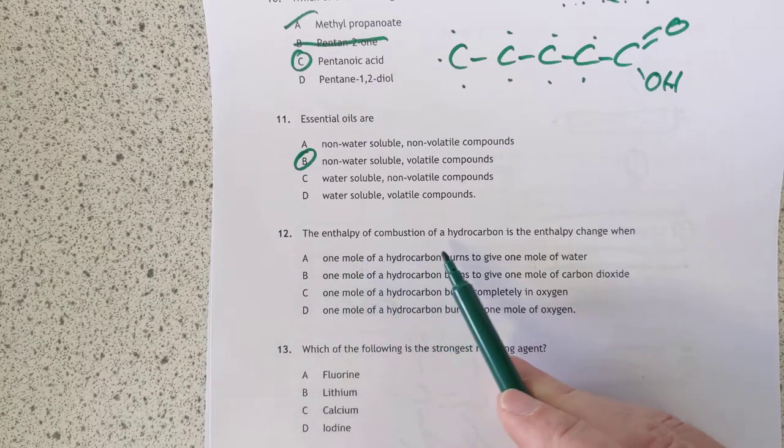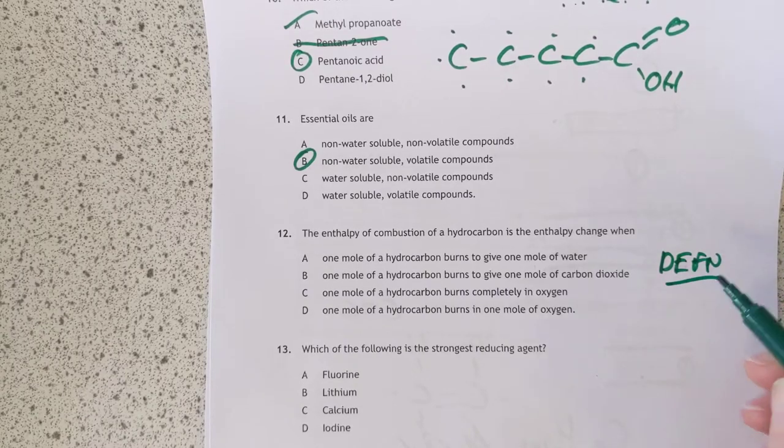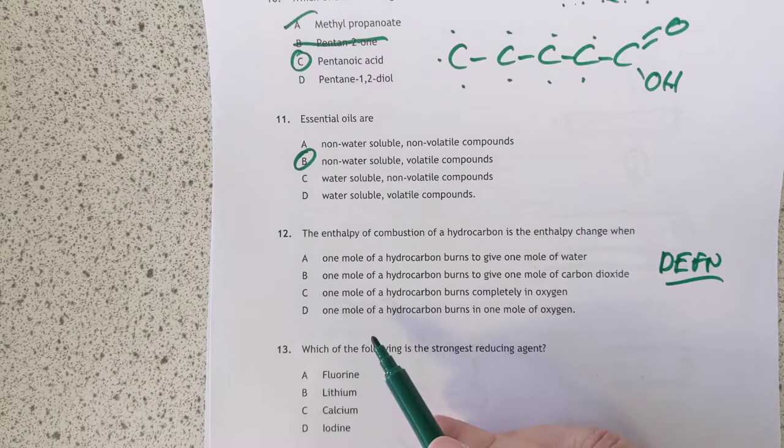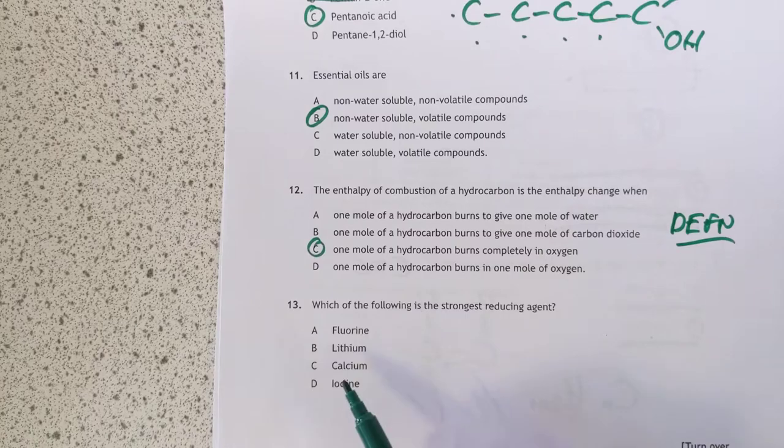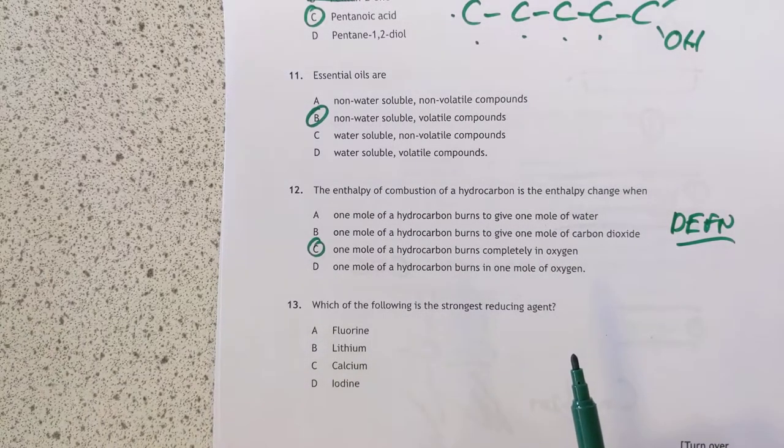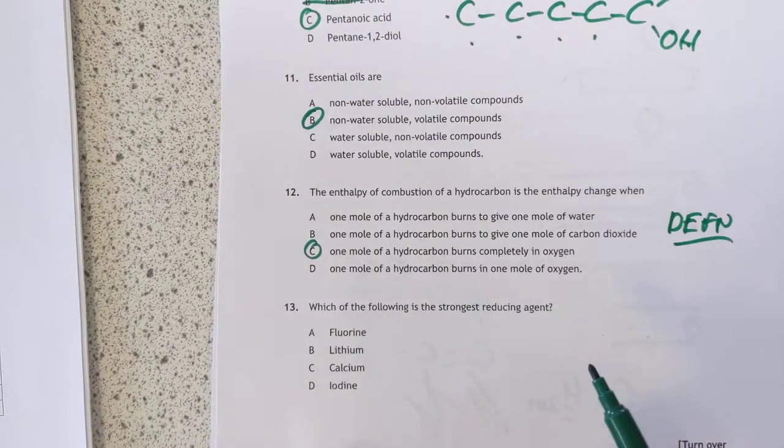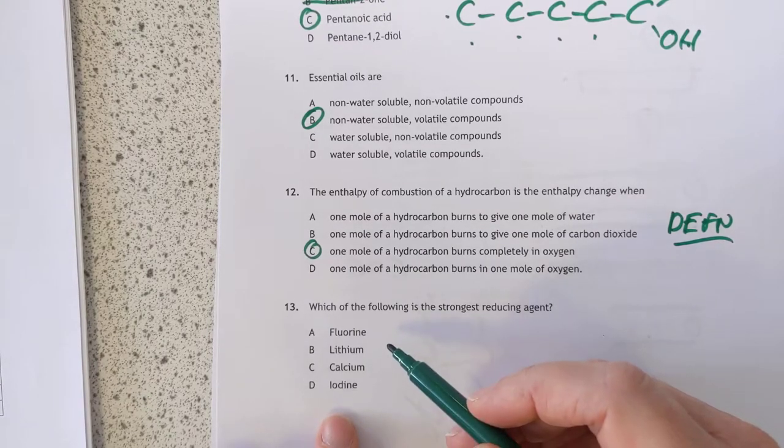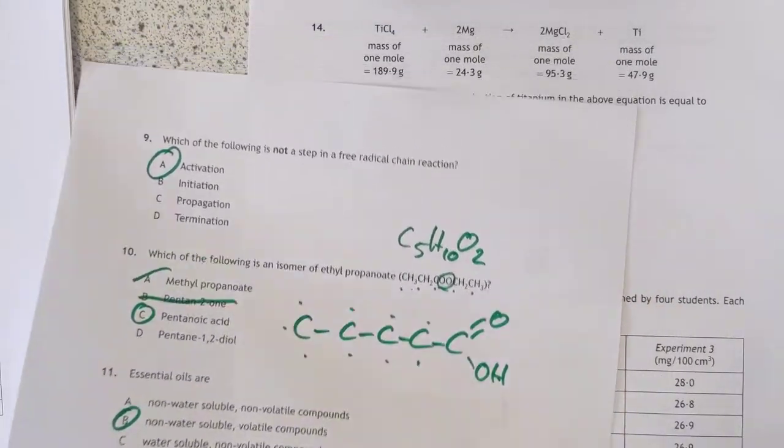12 and 13. Enthalpy of combustion of a hydrocarbon is the enthalpy change when. So it's definition time. It's when you burn one mole of hydrocarbon completely in oxygen. So it's C. The rest are all jiggling around the definitions and they're all wrong. Number 13. Which of the following is the strongest reducing agent? Data book. Best reducing agent, top right. So definitely not that one. And that's the bottom left. Lithium. Yeah, it's lithium. Top right. Another data book treasure hunt. That's a strange bunch of questions.